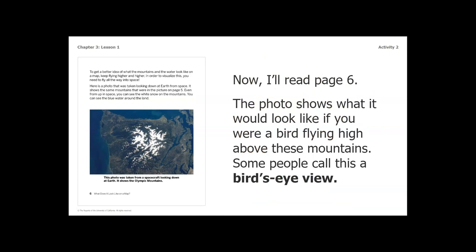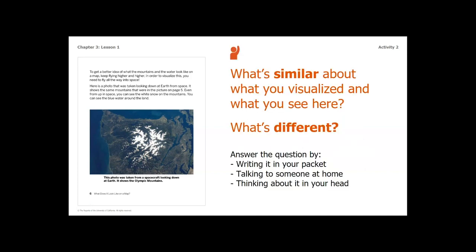Now I'm going to read page six. 'The photo shows what it would look like if you were a bird flying high above these mountains. Some people call this a bird's eye view. To get a better idea of what the mountains and the water look like on a map, keep flying higher and higher. In order to visualize this you need to fly all the way into space. Here's a photo taken looking down at Earth from space. It shows the same mountains that were on page five. Even from up in space you can see the white snow on the mountains and the blue water around the land. This photo was taken from a spacecraft looking down at Earth — it shows the Olympic mountains.' Take a second to think about what is similar and what is different between what you visualized and what you see here. Pause the video and answer.